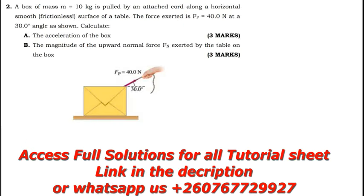Question 2: a box of mass M2 = 10 kg is pulled by an attached cord along a horizontal frictionless surface of a table. The force exerted is Fp = 40 Newtons at an angle of 30 degrees. We want to find the acceleration, and also the magnitude of the upward normal force exerted by the table. Since the object is moving in the x-direction, I need to identify the x-component of the applied force.